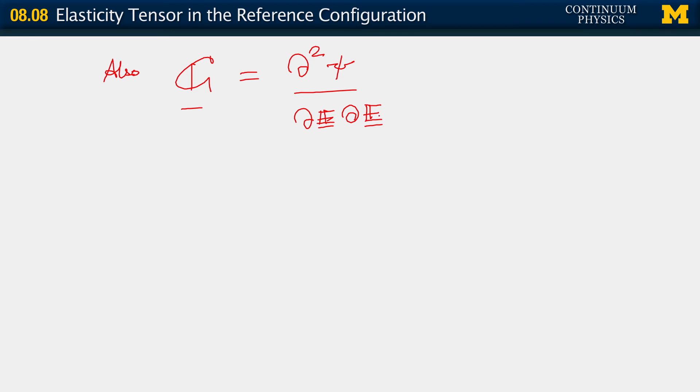Now, if we have a model other than the Samanov-Kirchhoff model, what we are going to see is that this quantity C, the elasticity tangent, in general, is non-linear. It's not just non-linear, it is also non-constant. This thing is non-constant for all models other than Samanov-Kirchhoff.